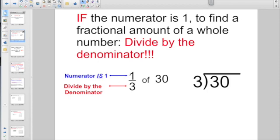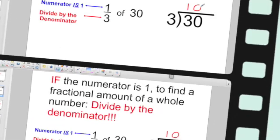So if the numerator is one, we're going to divide by the denominator, right? If they wanted to know what one-third of 30 is, 30 is going to be my dividend, divide by the denominator. One-third of 30 is 10. That part is review.